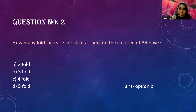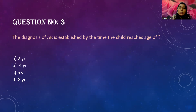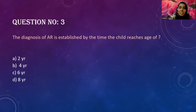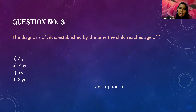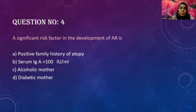Question three: the diagnosis of allergic rhinitis is established by the time the child reaches the age of — Option A: two years; Option B: four years; Option C: six years; Option D: eight years. According to Nelson, the diagnosis of allergic rhinitis is established mostly by the time the child reaches six years of age. Please note: the prevalence actually peaks late in childhood.